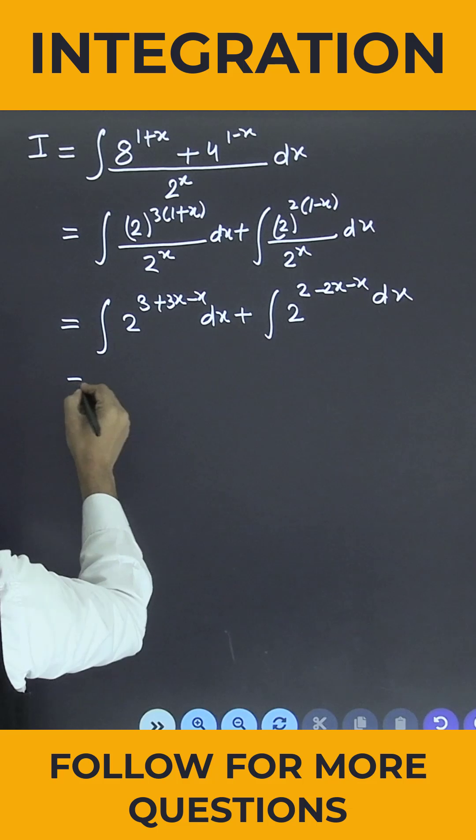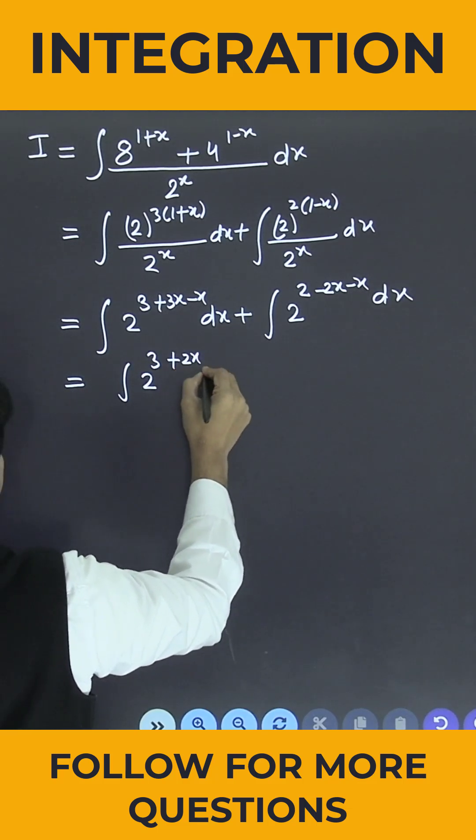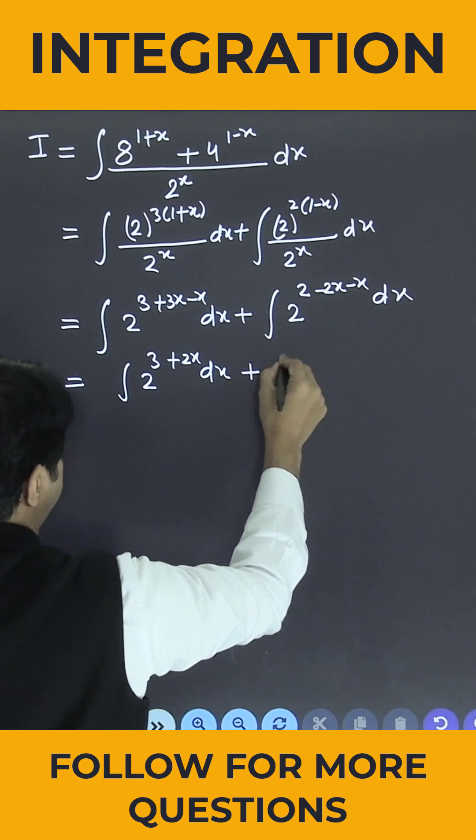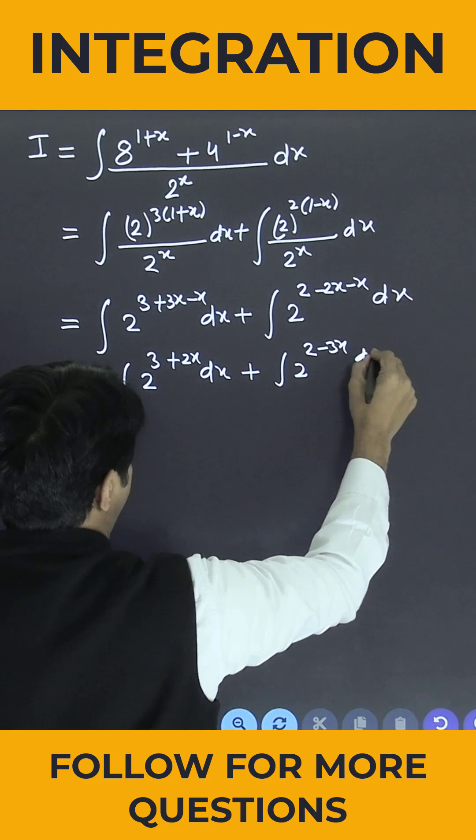Now this is the integral of 2 to the power 3 plus 2x, dx, plus the integral of 2 to the power 2 minus 3x, dx.